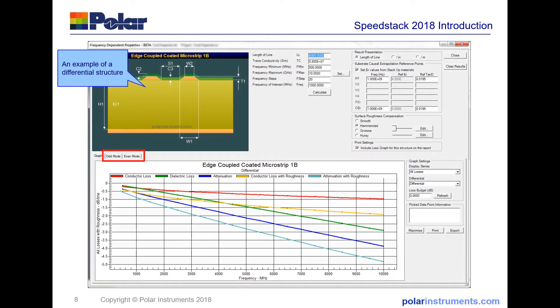Here's an example of a structure with a differential edge coupled coated microstrip. You can see here that SpeedStack records the characteristics both in odd mode and even mode, as well as drawing the graphs of the structure itself.